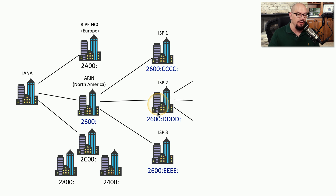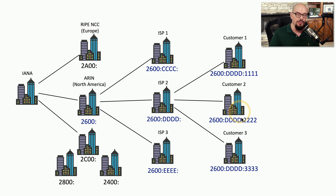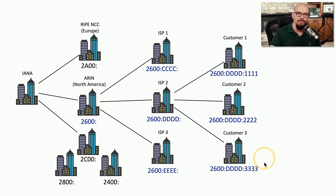If you're on ISP2, you could be assigned 2600:DDDD, and so on. If you're a customer of ISP2, ISP2 could then subnet the IPv6 address further. So customer 1 might get 2600:DDDD:1111, customer 2 would get the 2222 block, and customer 3 might get the 3333 block. This allows us to easily subnet these into ranges that are easy to keep track of and understand, and everyone would also get a separate block, meaning they have a unique IPv6 address.